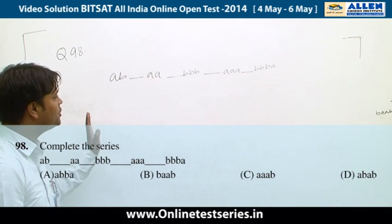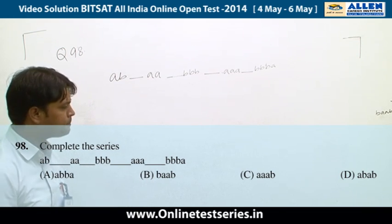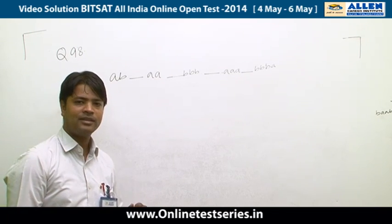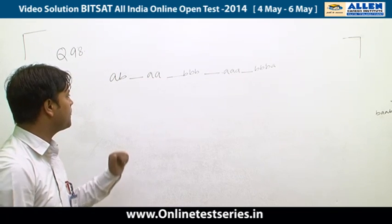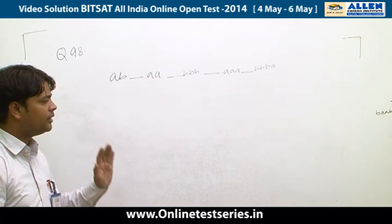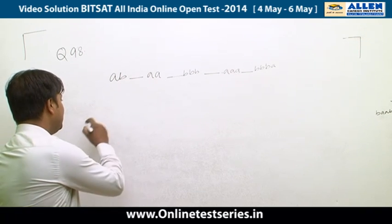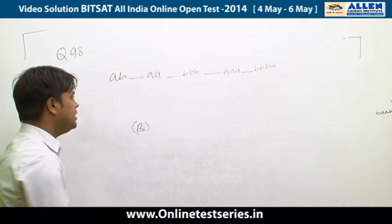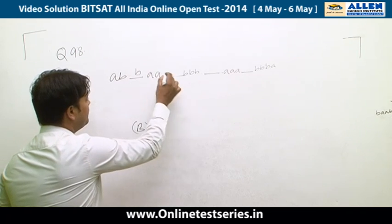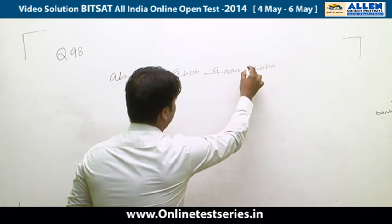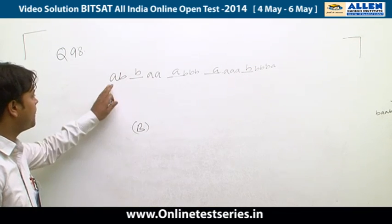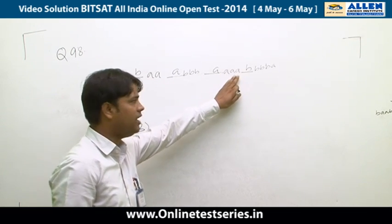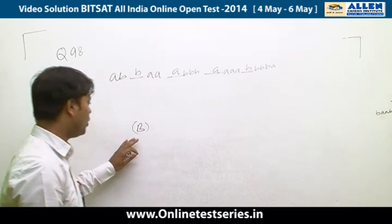Question 98 is an alphabetical series. In alphabetical series, we check each option to find the correct one. Considering all options, option B is the most suitable. Placing the alphabets in the blank spaces gives the pattern: a, b, b, a, a, then b, b, b, b, then four times a. So the right answer is B.